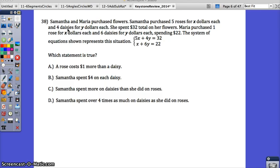So let's read over these. A rose cost one more than a daisy. Well, we would have to solve for the cost to find out if that's true. Samantha spent $4 on each daisy. Well, let's see. The daisies cost Y dollars each. So we'd have to solve to find that. Samantha spent more on daisies than she did on roses. Or Samantha spent over 4 times as much on daisies as she did on roses. So we need to solve this system.